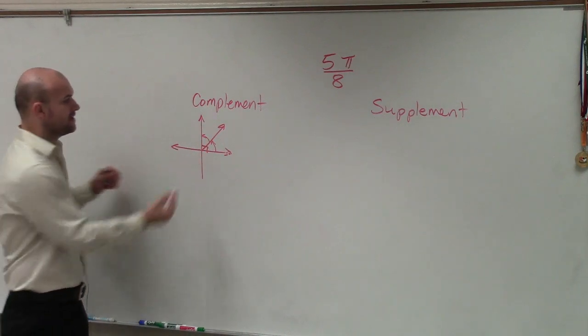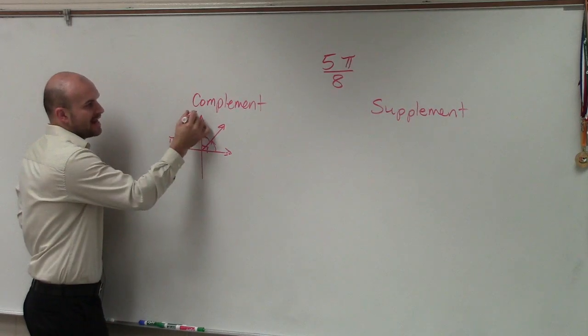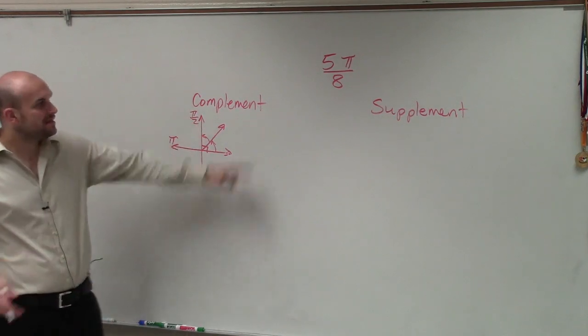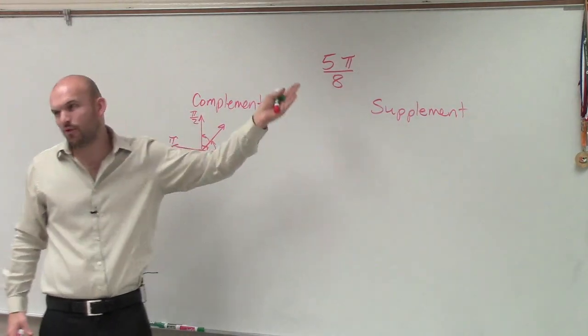But remember, if we talked about halfway around a circle is π radians, then we could say a complement is also equal to π/2. Because we're not going to be talking about degrees here, unless you wanted to convert to degrees, but then you're doing a whole bunch of extra math.